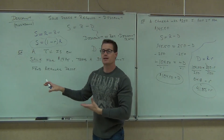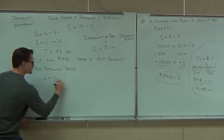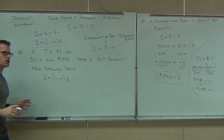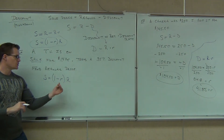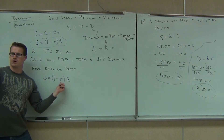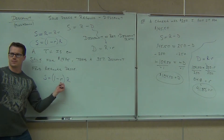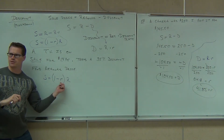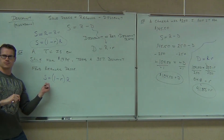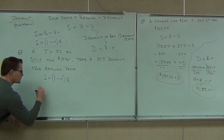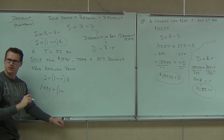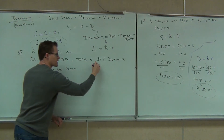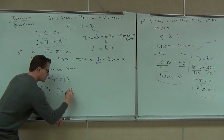So if our sale price equals 1 minus little r times big R, what do you know? Do you know big R? No — that's what we're looking for. Do you know little r? Yes. Little r stands for the rate: 35%, and you'd write that as 0.35. What's s? $1,495. So we've got $1,495 equals 1 minus 0.35 times R.